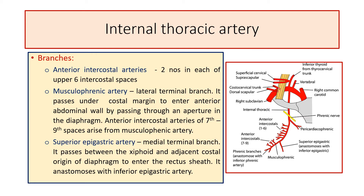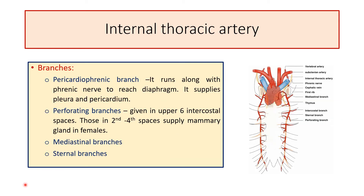You can also see the pericardiophrenic artery, which runs along with the phrenic nerve to the diaphragm. Other branches of the internal thoracic artery include: the pericardiophrenic branch, which runs with the phrenic nerve to reach the diaphragm and supplies the pleura and pericardium; perforating branches given in the upper six intercostal spaces — those in the second to fourth spaces supply the mammary gland in females; mediastinal sternal branches supplying the thymus, lymph nodes, and pericardium; and sternal branches.